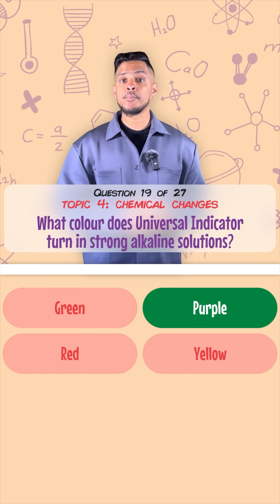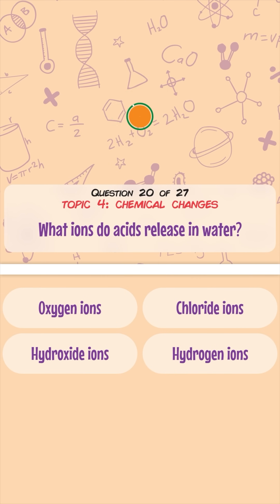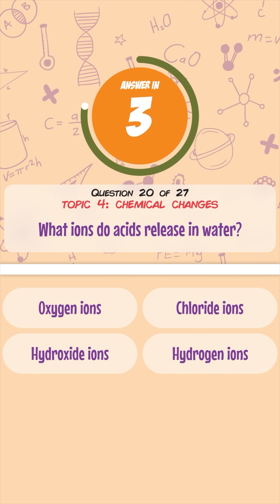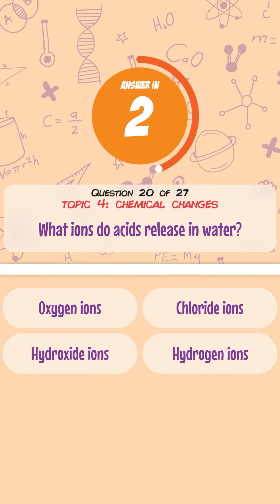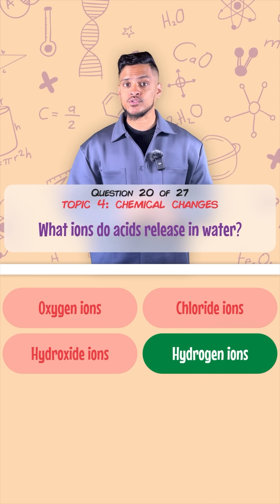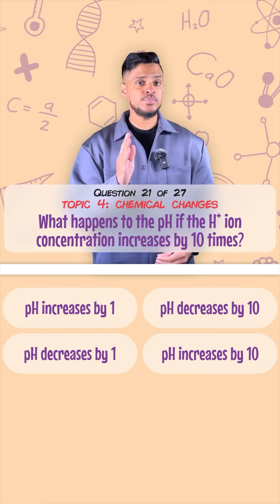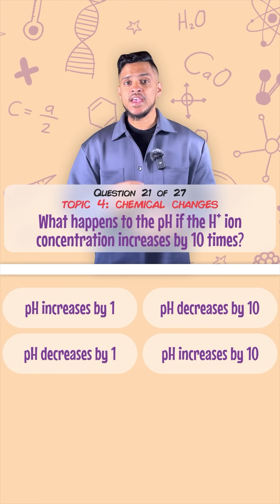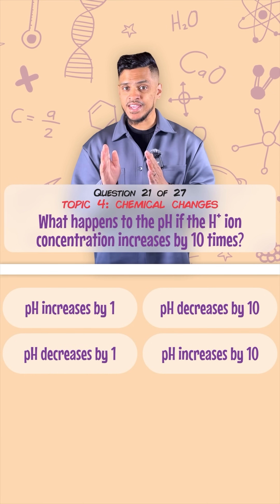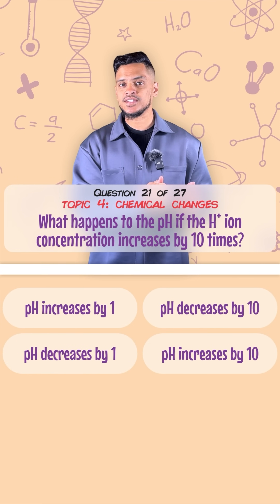What colour does universal indicator turn in strongly alkaline solutions? They turn purple. What ions do acids release in water? They release H+ ions, or hydrogen ions.